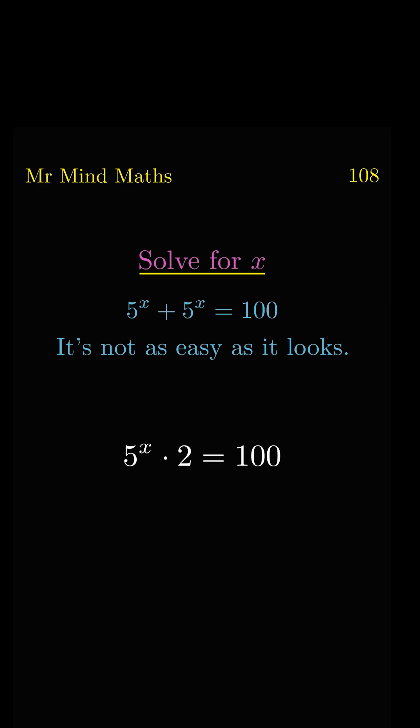On the left-hand side, 2 is multiplied with 5^x, so it will divide to the right side. As we know that 100 divided by 2 equals 50.